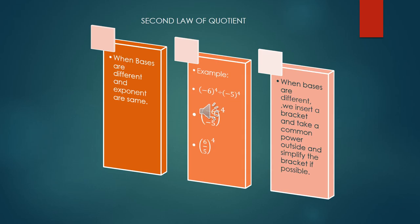This is second law of quotient. In this example bases are divided by each other. Bases are different and exponents are same.